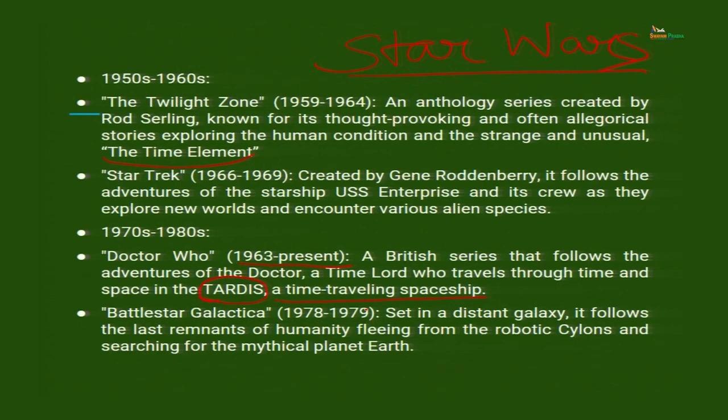Battlestar Galactica ran from 1978 to 1979 — only one year — but it made a lasting impact on viewers. Set in a distant galaxy, it follows the last remnants of humanity fleeing from the robotic Cylons and searching for the mythical planet Earth. It is a story after the apocalypse on Earth: everybody has left, human beings are settling on some other planet, and the machines that destroyed human civilization are chasing them. These human beings, roaming in space, are searching for the mythical planet Earth for the first time.